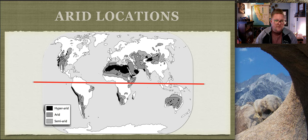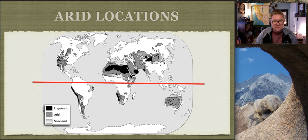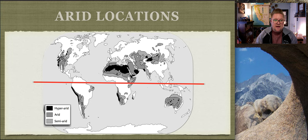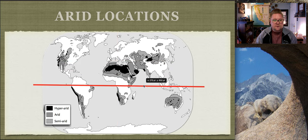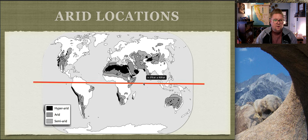We can see a lot of aridity in California and the hyperarid areas towards the Baja California portion. These are desert regions where the amount of evaporation exceeds precipitation, so there's no standing water. There is a correlation with latitude as a major portion of what creates these conditions.